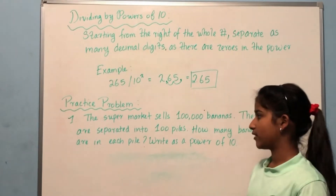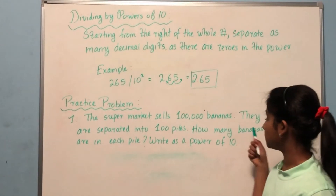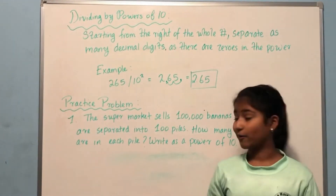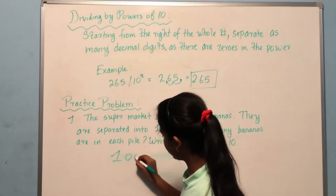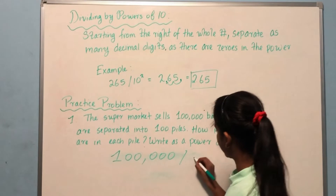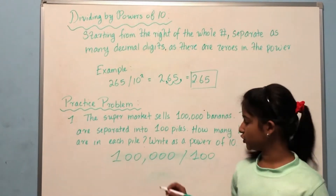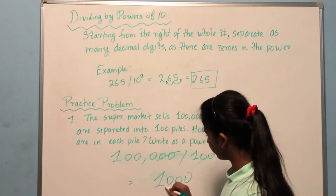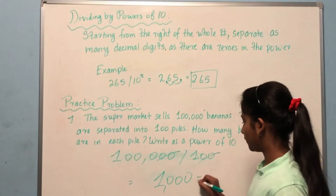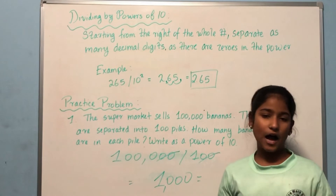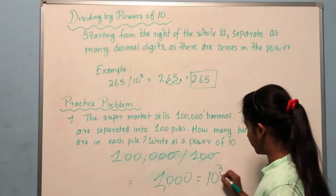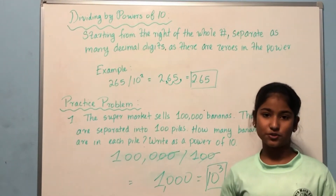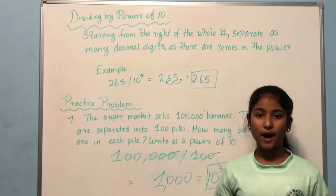Now let's do a practice problem: a supermarket sells 100,000 bananas and they are separated into a hundred piles. How many bananas are in each pile? Write as a power of ten. We're dividing 100,000 by 100. We can cancel two zeros from the top and the bottom, so our answer is 1,000. We need to write it as a power of ten — there are three zeros, so the answer is ten to the power of three. There are ten to the power of three bananas in each pile.